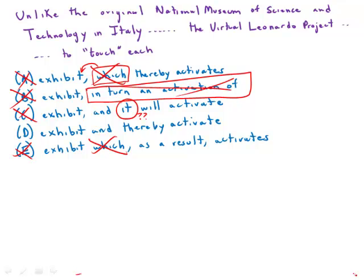Right away, this narrows things down to D. What's really going on here is that when I touch the exhibit — in the act of touching it — I activate it. So the touching and the activating are done by the same person, and in some sense they're really the same action. Of course, those should be in parallel: 'to touch and activate.' And that's exactly what we have in D: 'to touch and thereby activate.'